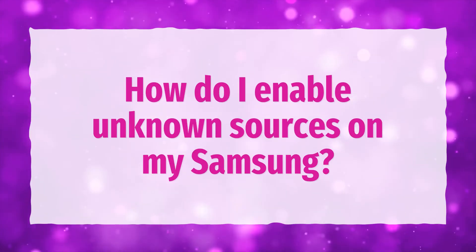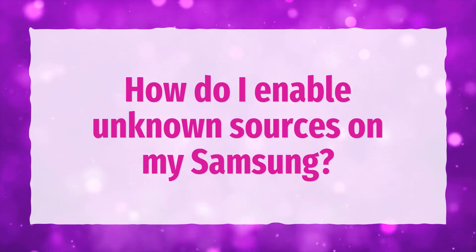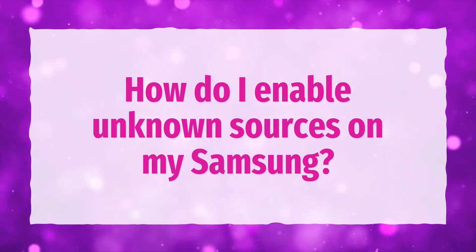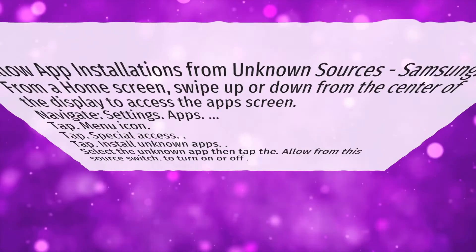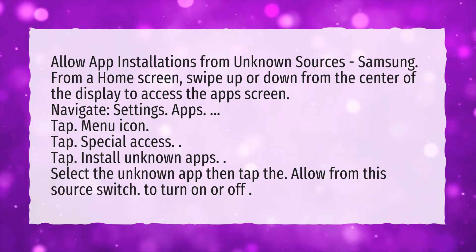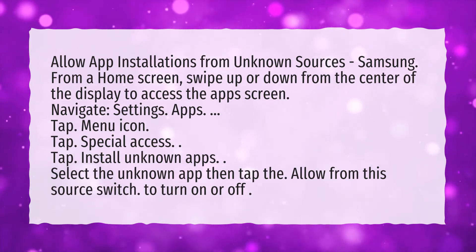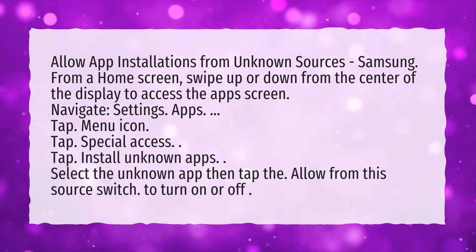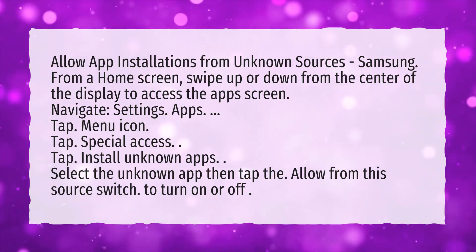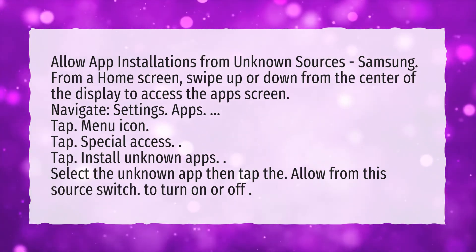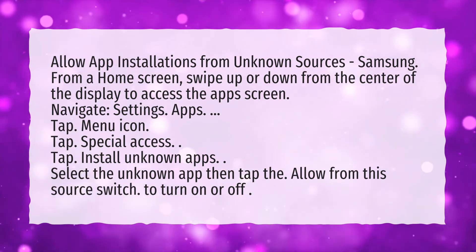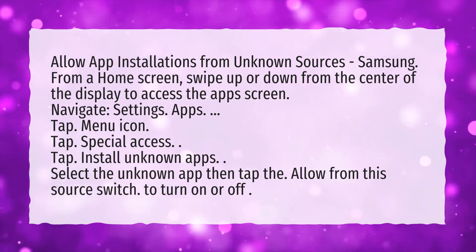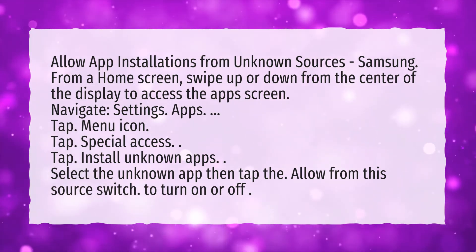How do I enable unknown sources on my Samsung? To allow app installations from unknown sources on Samsung: from a home screen, swipe up or down from the center of the display to access the apps screen.